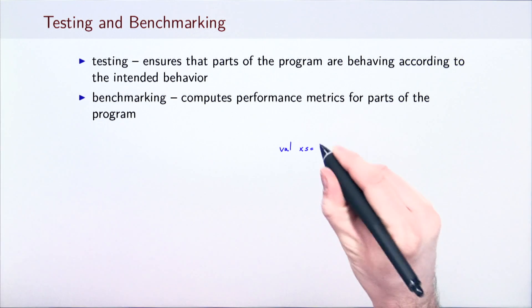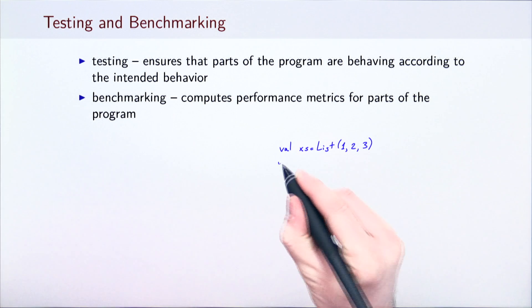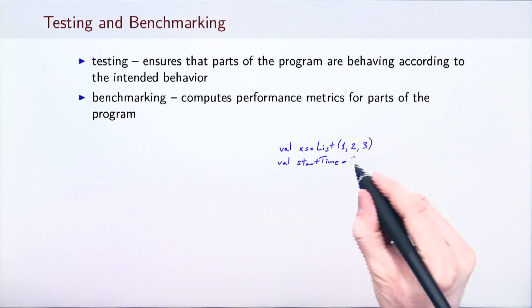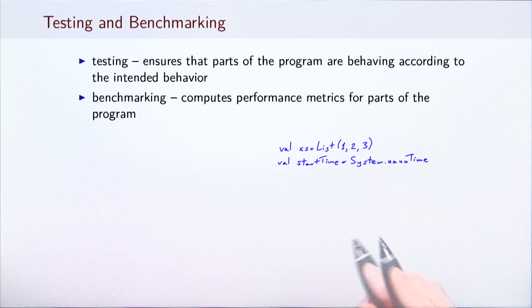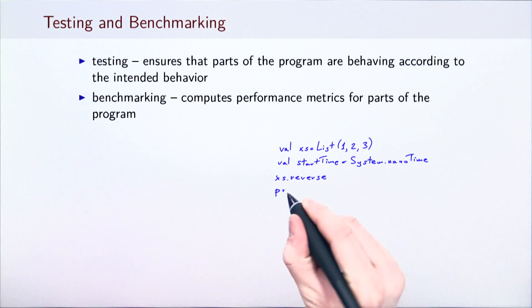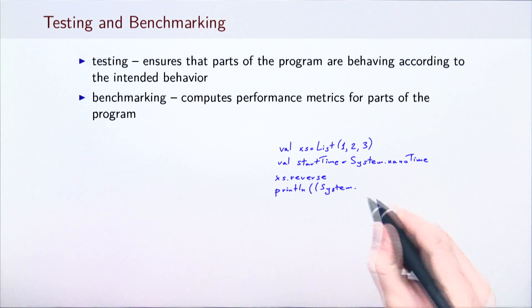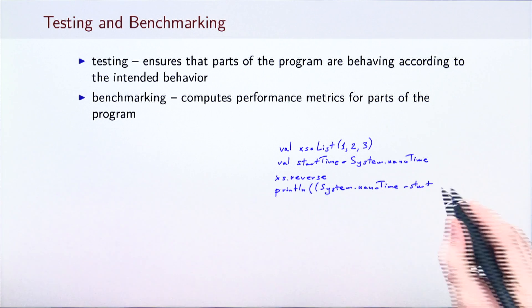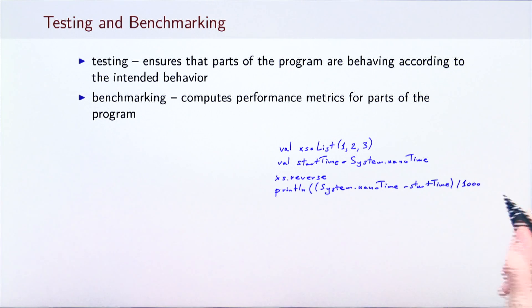For instance, if we want to test the running time of the reverse function on a list, we could instantiate the list, record the starting time, call the reverse function, and then record the time again to compute the total running time. At the end, we print the running time to the standard output.